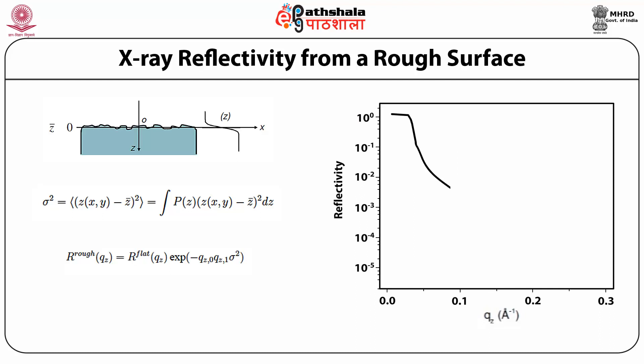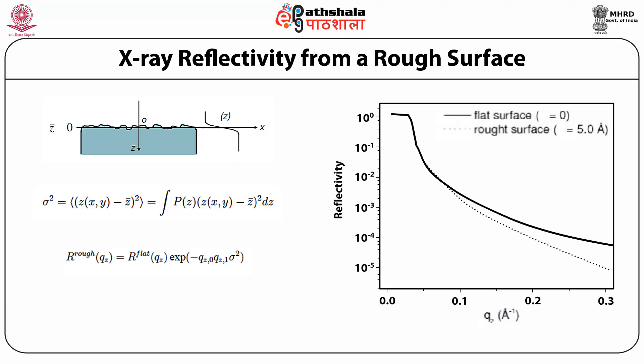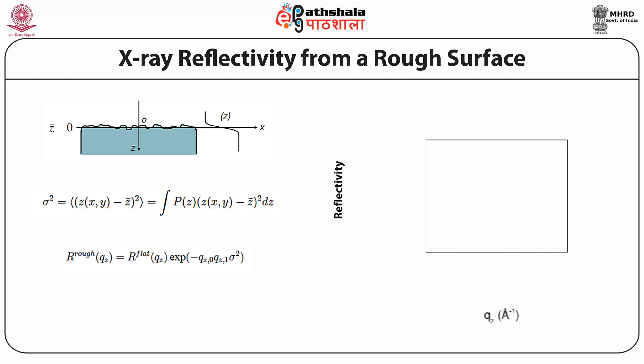The larger the average roughness sigma, the steeper the fall in reflectivity as a function of qz, as seen in the diagram.